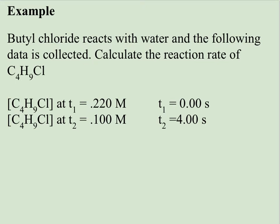Here's an example of actually calculating it. Butyl chloride reacts with water, and the following data is collected. Calculate the reaction rate of butyl chloride. I've given you the concentration of the butyl chloride at 0 seconds and 4 seconds. We really don't need the balanced equation to calculate the reaction rate. Instead, what I need for my rate is the change in concentration. I went from 0.220 to 0.100, and my change in time, I went from 0 to 4 seconds. You can just take the big minus the little, and then you'll have positive values. We're going to express it as a positive value anyway, so it really doesn't matter. This difference would be 0.120 over 4.